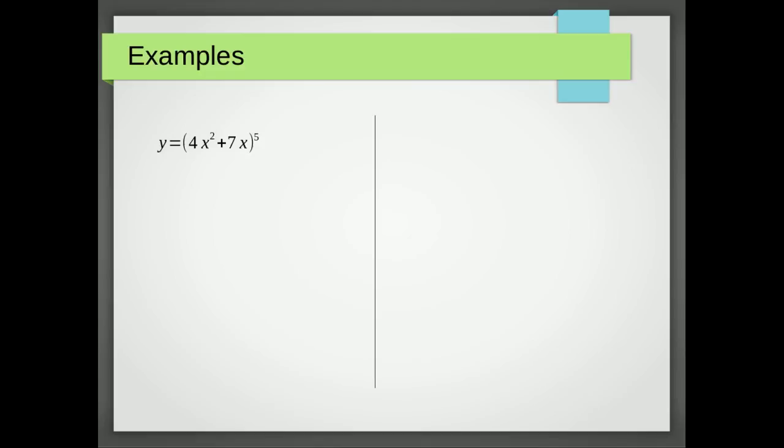So let's look at two examples. In this first one we're going to have to multiply by five. Then the inside of the bracket stays the same.